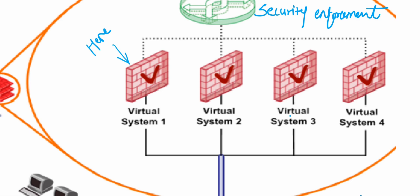All the functionality of a regular firewall is present on each virtual system. Whatever virtual system is designated for a particular network will inspect all the traffic hitting it, no matter where that traffic is forwarded from — whether from a virtual router or elsewhere. Based on the policy and configuration, the packet will be allowed or blocked and then sent to the destination. This security enforcement is handled by the virtual system and is part of the traffic flow and traffic management.